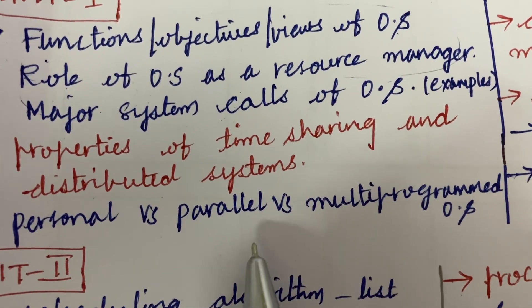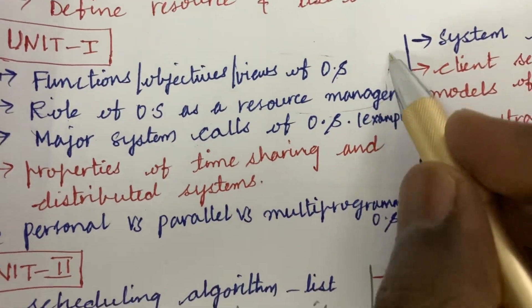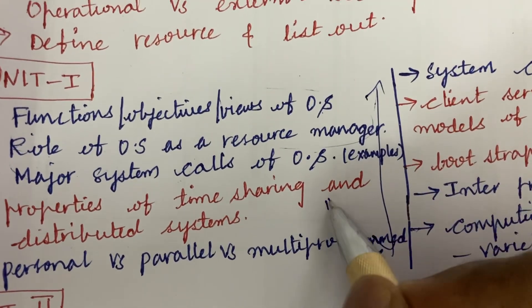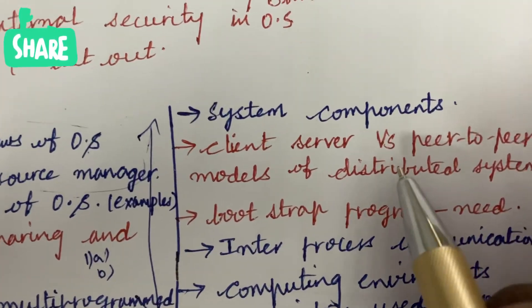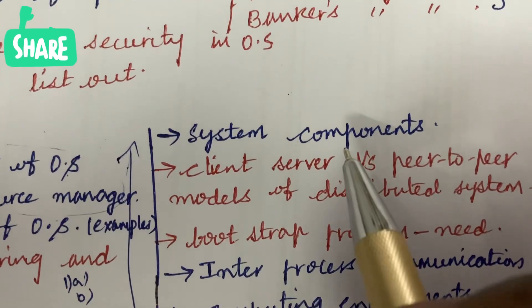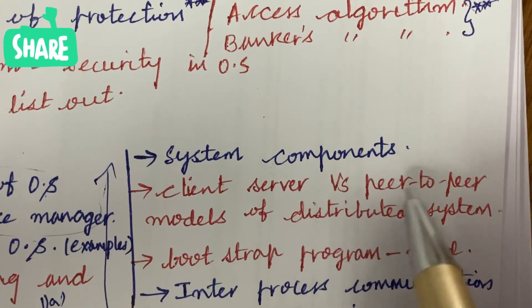The properties of time sharing and distributed systems as well as multiprogrammed parallel and personal operating systems. From this part you are going to get 1A as well as 1B. Define the system components and list them, as well as the differences between client-server and peer-to-peer models of distributed systems.